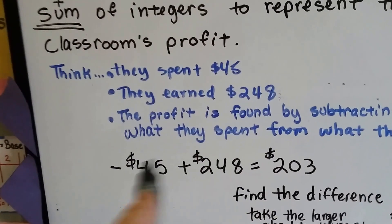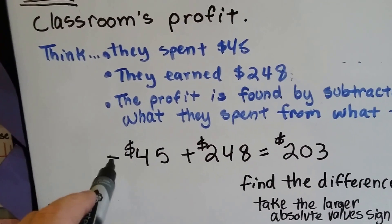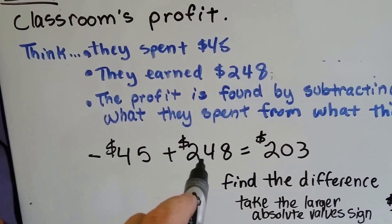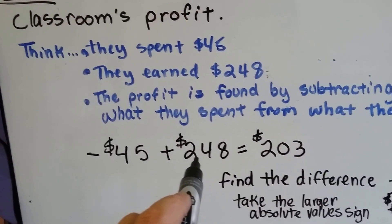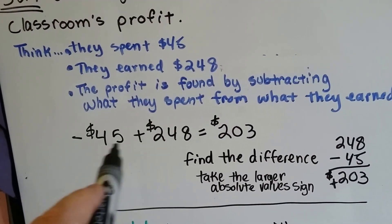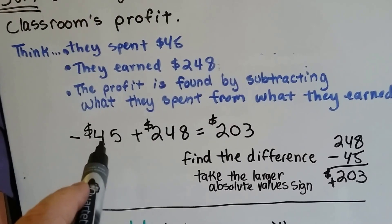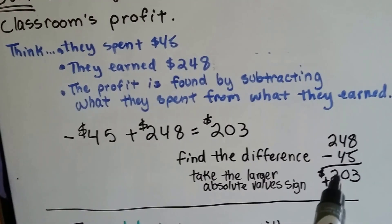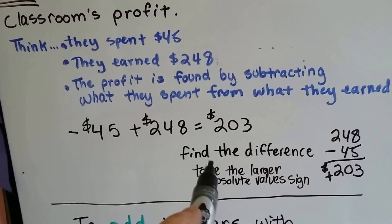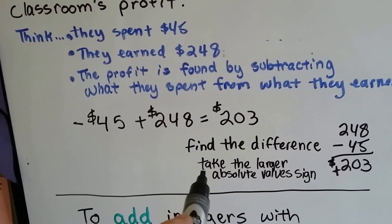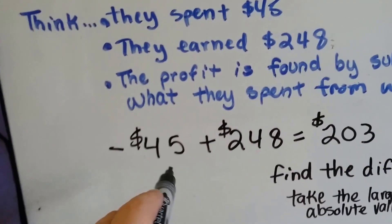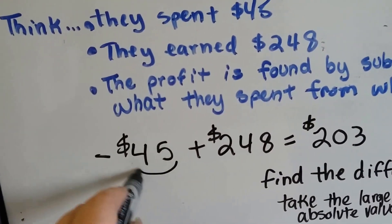To write our equation, we add the two together: negative $45 plus positive $248. We find the difference between the two numbers — between 45 and 248 — and that's $203. Then we take the sign of the number with the larger absolute value, the one that's farther from zero.